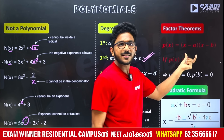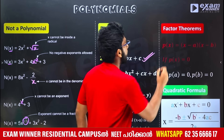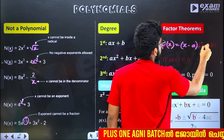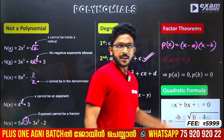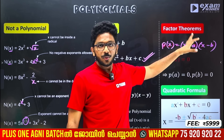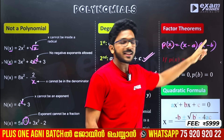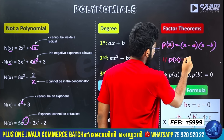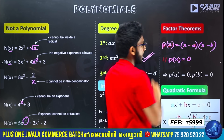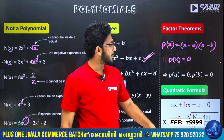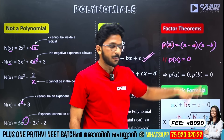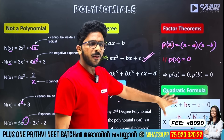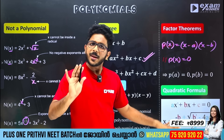P of x is equal to x minus a into x minus b. These are factors. When P of a equals 0 and P of b equals 0, then x equals a and x equals b are zeros. If you study this formula you will be able to handle second degree polynomials.